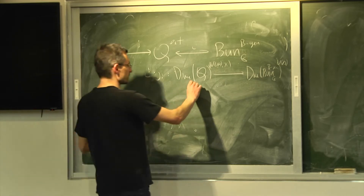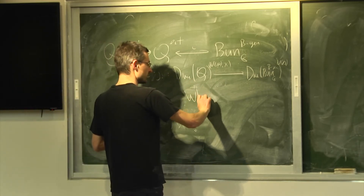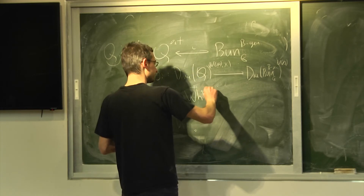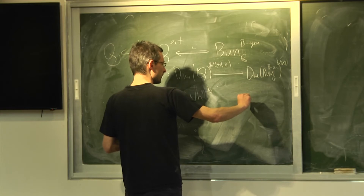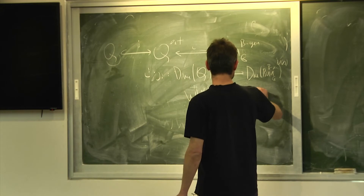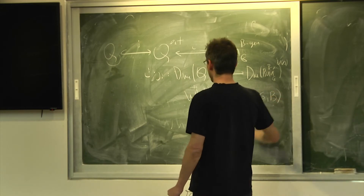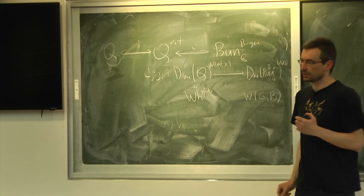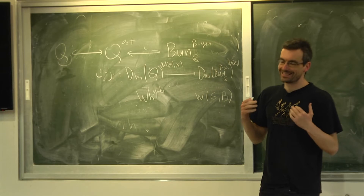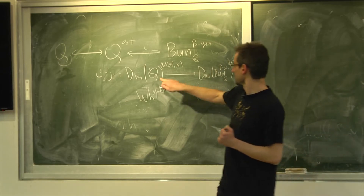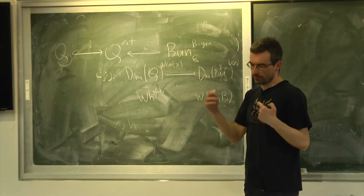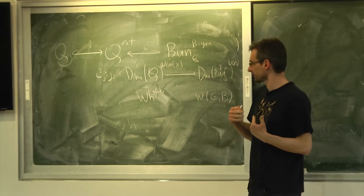So this is what we denoted W — kind of W_G^glob. And this is W_G^B. So I'll say abstractly what we need to do. To execute this gluing procedure, you need to glue two certain — to identify two certain functors. We need to show that this functor, under the identifications of the respective categories with the spectral side, goes to some very specific functor on the spectral side.